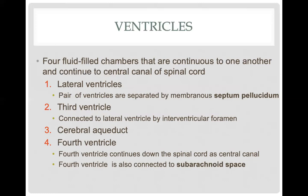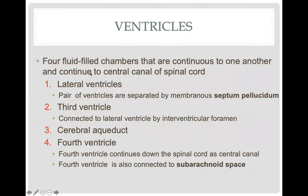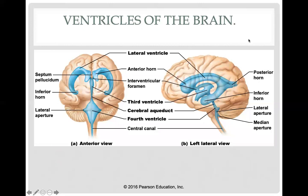The ventricles are paired structures on both the left and right sides of your brain, separated from each other by a membrane called the septum pellucidum. The lateral ventricles look like horn or horseshoe-shaped structures when viewed from the anterior or lateral perspectives. The third ventricle is connected to your lateral ventricles by a structure called the interventricular foramen, and location-wise the third ventricle is where your thalamus sits.